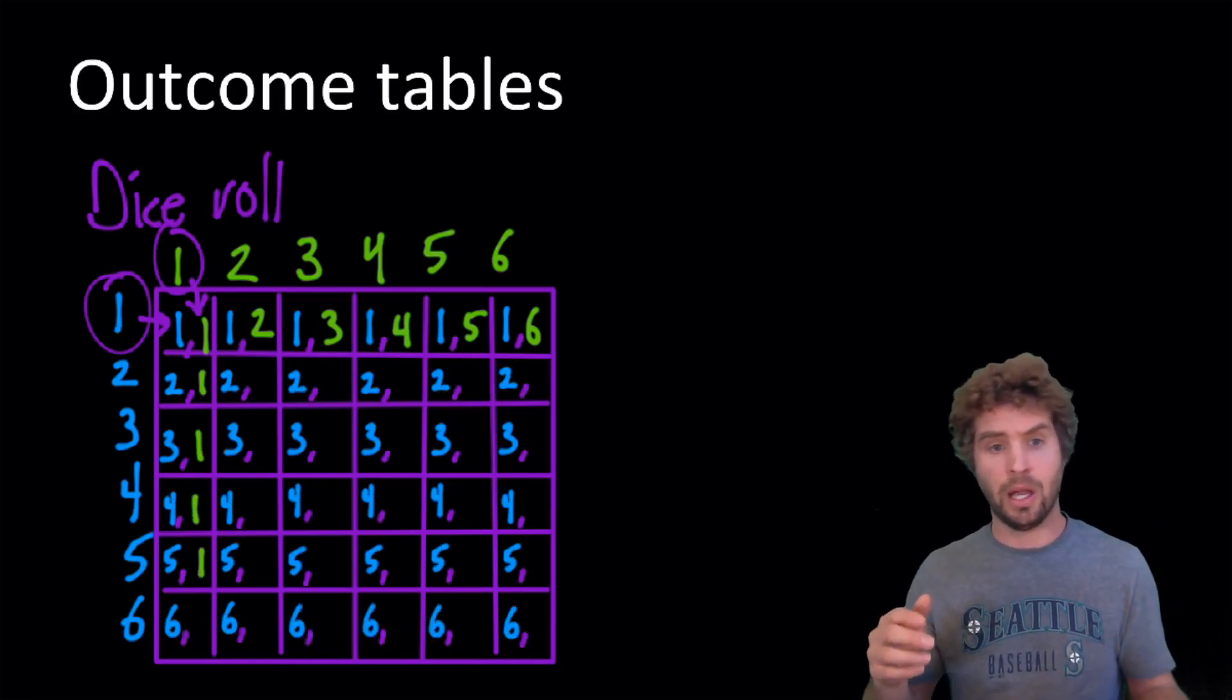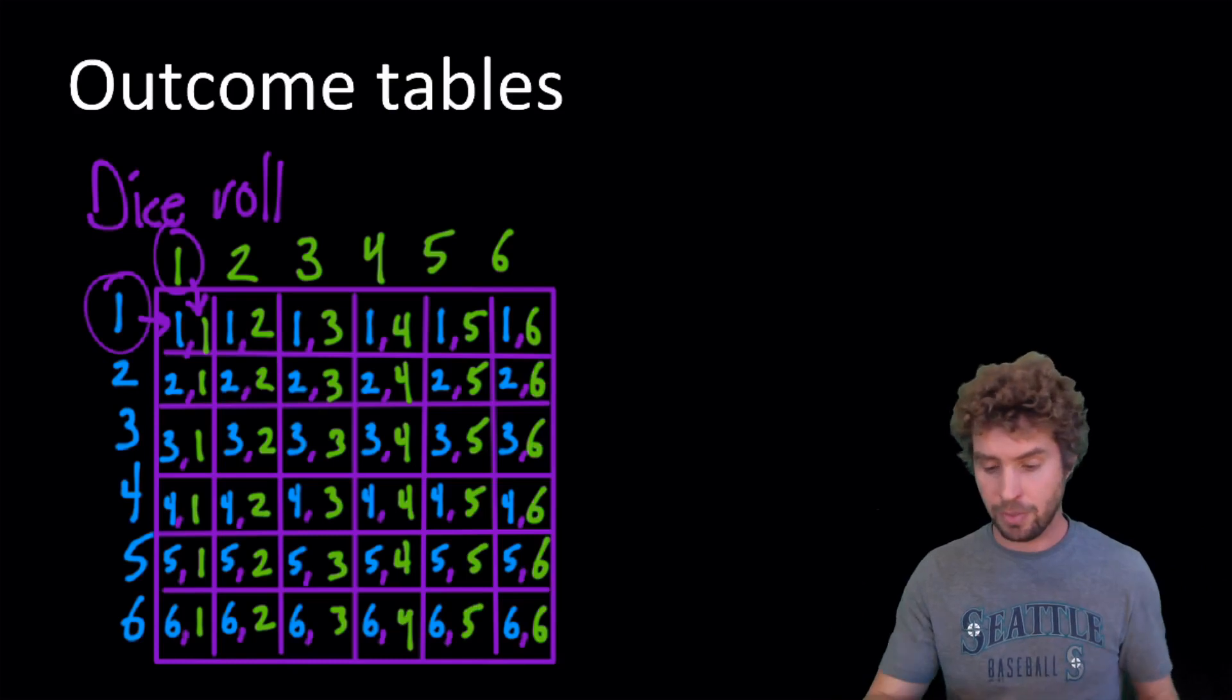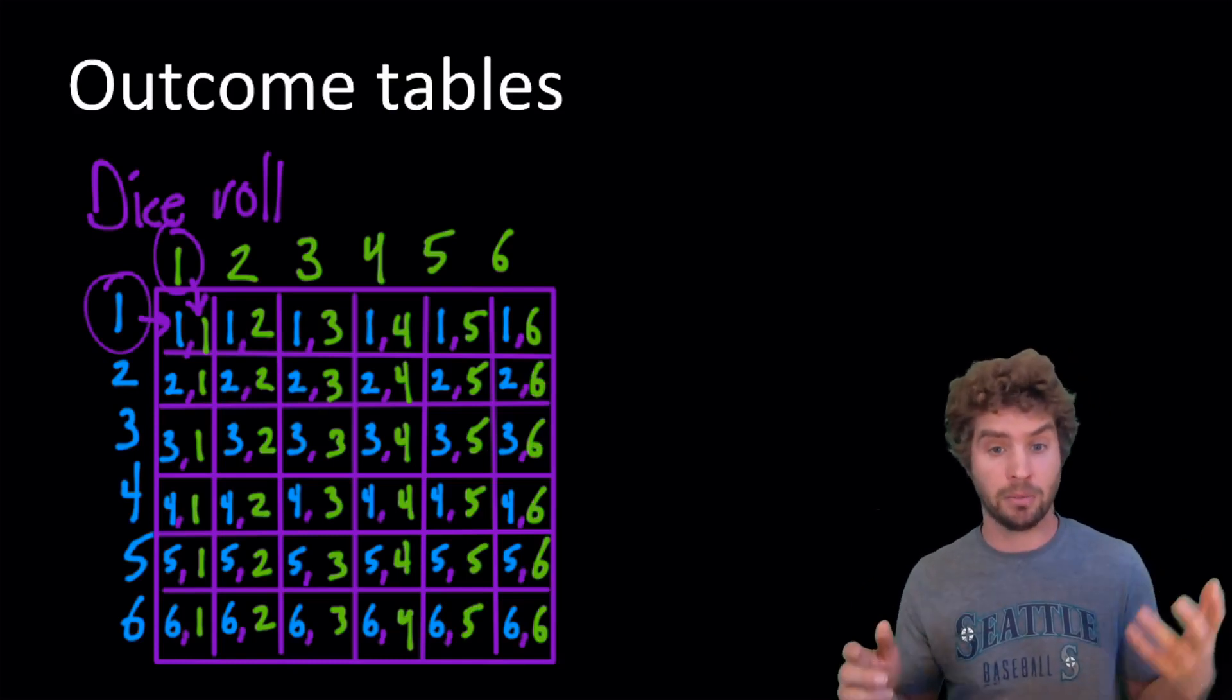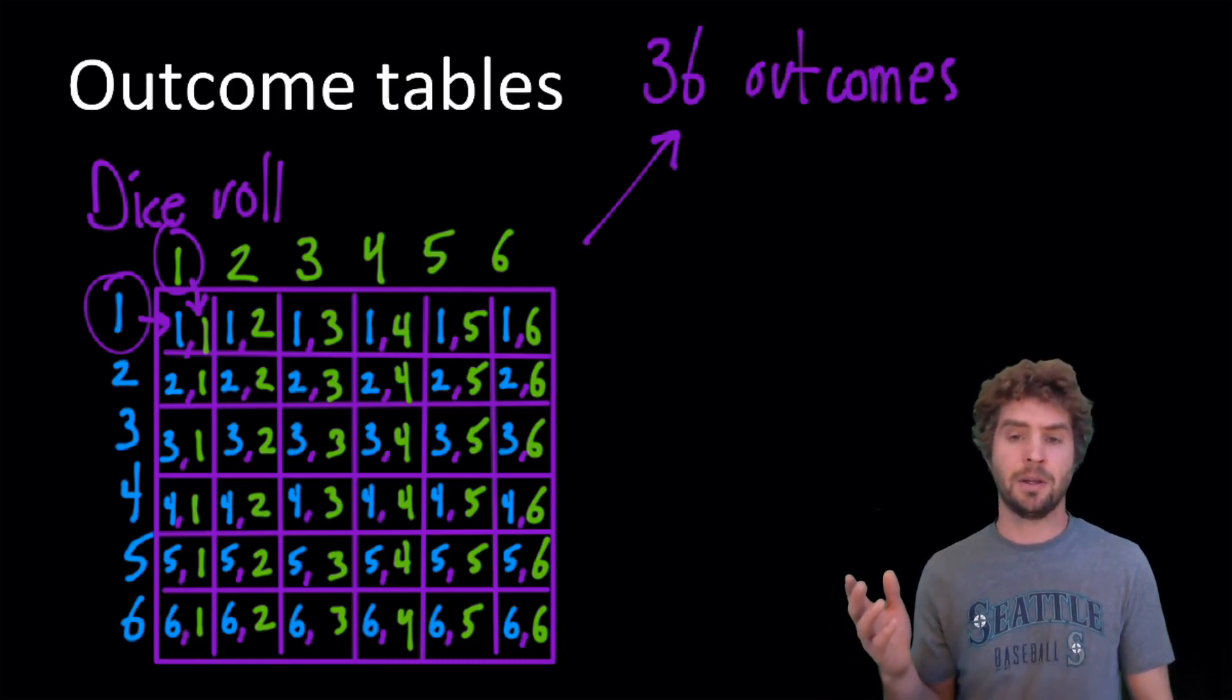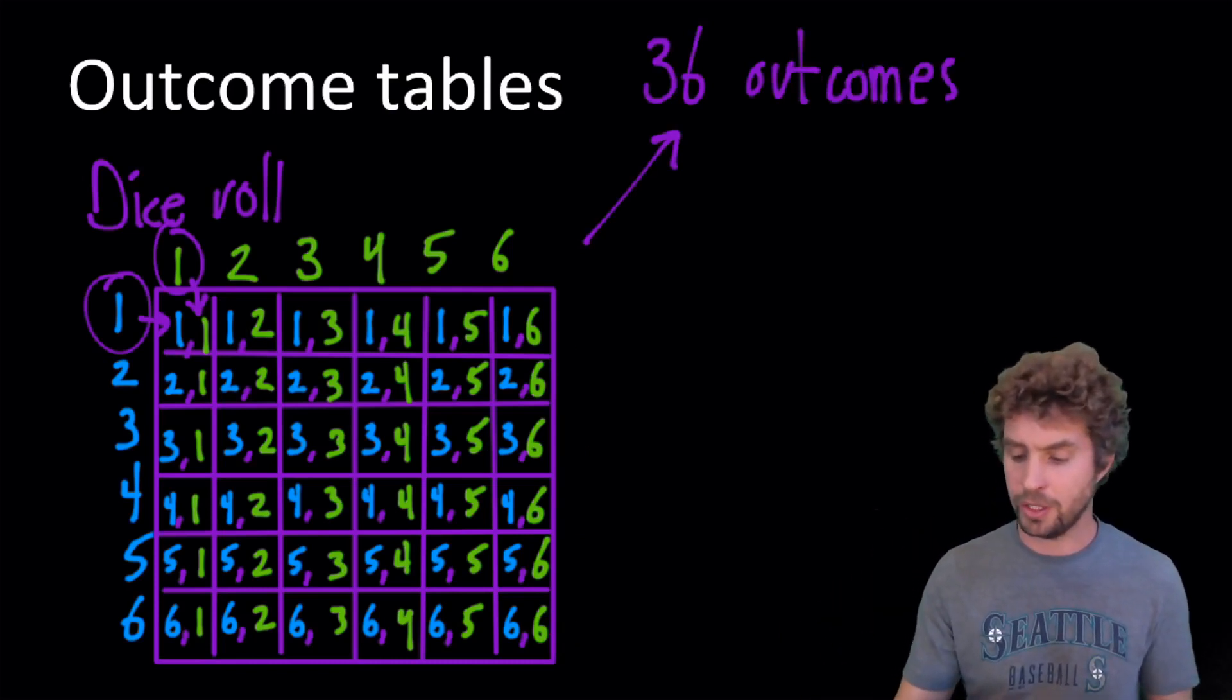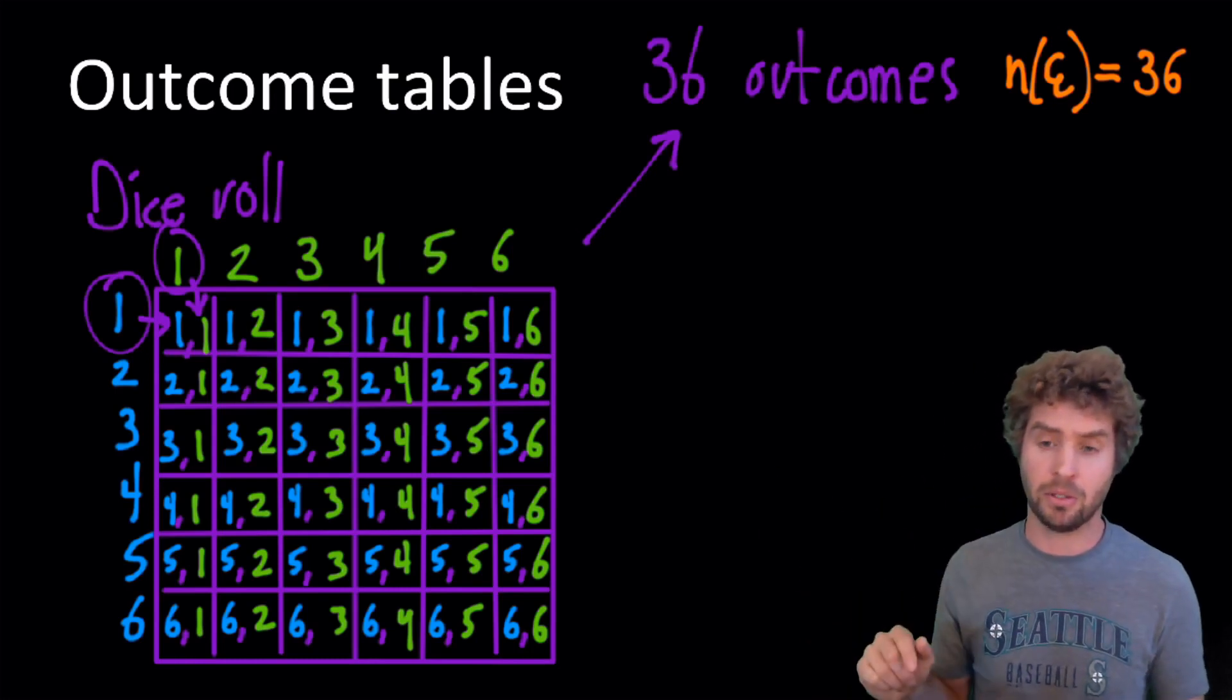And likewise, we can go through and fill out our entire table for every single possible outcome. So we could start with a two, and then have a one, or a two, and then a two, and so on and so forth. And we get this big grid of outcomes. This grid is six boxes along the bottom or the top, and six along the side. So six times six is 36. So there's a total of 36 different outcomes, or in other words, the number in the sample space is 36.